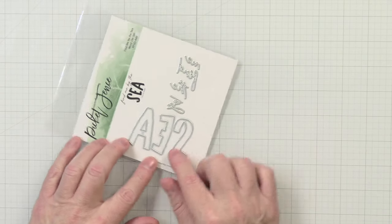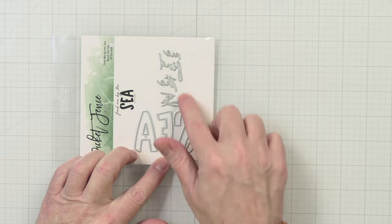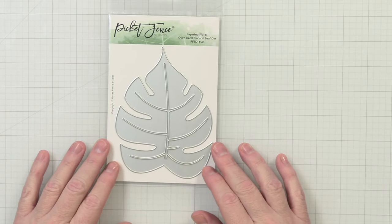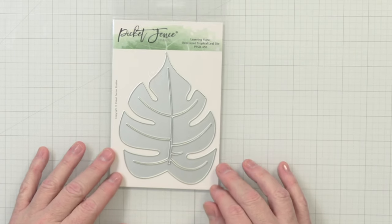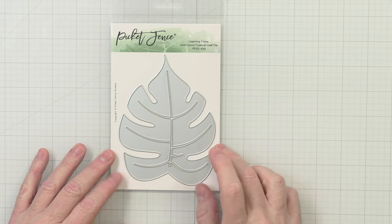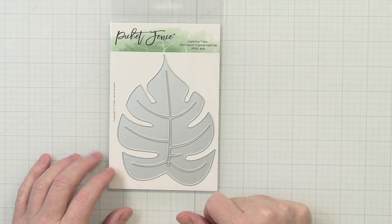Up next we have Find Me by the C. We have these big letters here that spell C, and then Find Me by the. Y'all, this might be one of my favorite ones. All of them are my favorite, but I really like this one. It's the layering flora oversized tropical leaf die. I really like this and I cannot wait to use this on a card. I wonder how big that is. It looks like it takes up a whole card you guys, a whole front of a card. That's awesome.